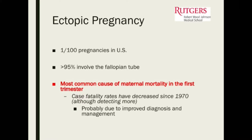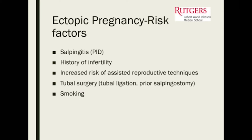The case fatality rates have been decreasing since the 1970s, likely because we're diagnosing them better — we have better blood tests that can pick up pregnancy hormone levels and better imaging, so we can diagnose and treat appropriately. Patients who have had a history of pelvic inflammatory disease or infertility are at higher risk.